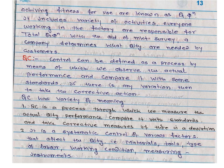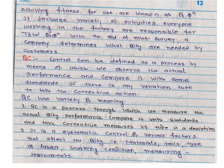Every person involved directly or indirectly in making a product should know the quality goal or quality policy of an organization. With the help of market survey, a company determines what quality is needed by the customers. Quality control can be defined as a process by means of which we observe the actual performance, compare it with some standards, and take corrective actions if there are any variations.